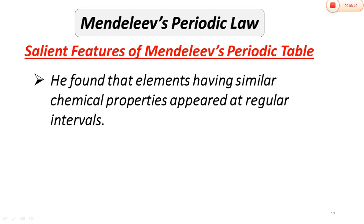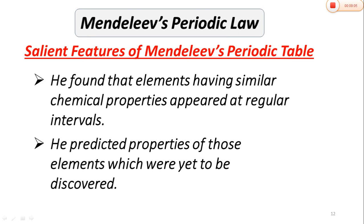We found that elements having similar chemical properties appeared at regular intervals when arranged in ascending order of their atomic weight — this is what we call periodicity. Mendeleev predicted the properties of those elements which were yet to be discovered. Even before they were discovered, he gave their predicted properties, and when those elements were eventually discovered, they matched his predictions.